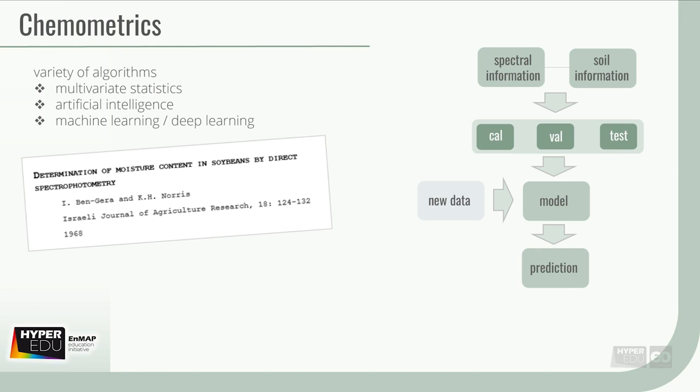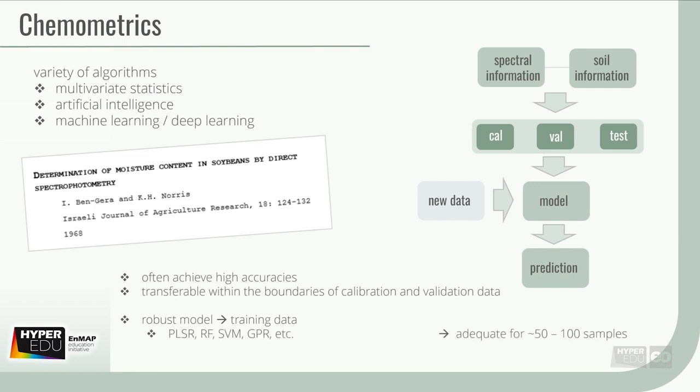These methods often achieve high accuracies and are transferable within the boundaries of calibration and validation data. However, to establish a robust model, training data are required. Different approaches exist for calibration and validation that allow to reduction the amount of in-situ data need. For some methods, less than 50 reference samples are sufficient. For example, PLSR, random forests, or support vector machines. Other deep learning approaches, such as multi-layer or deep neural networks, require a large training database.